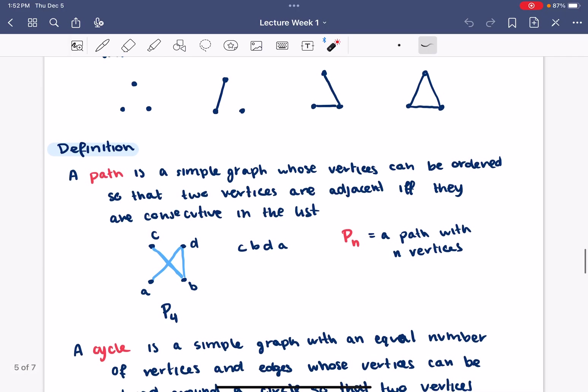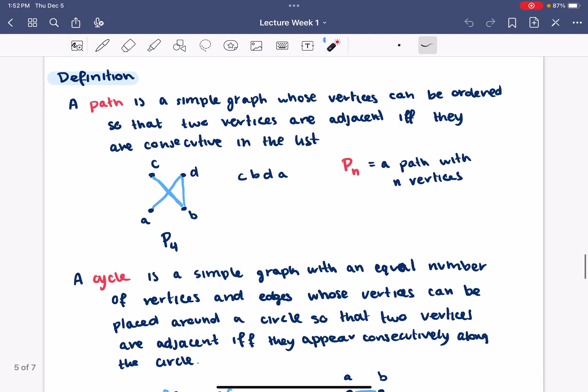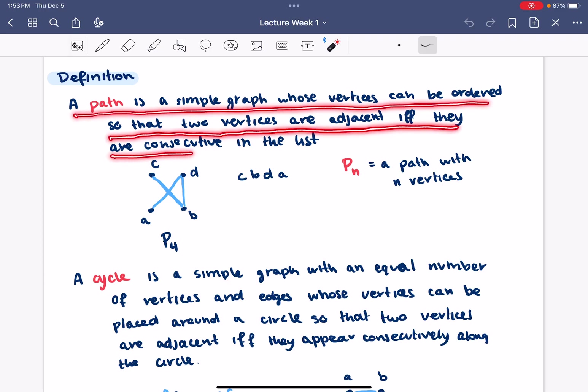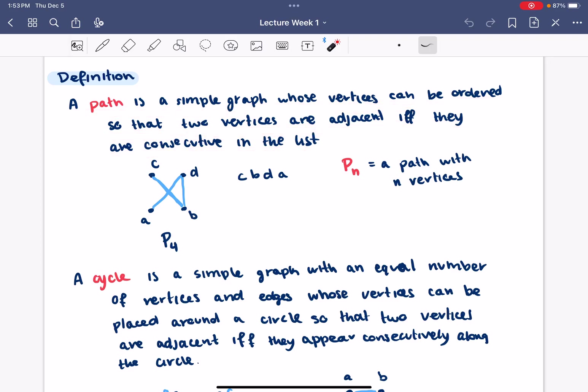Then some more vocabulary words related to graphs. A path is a simple graph whose vertices can be ordered so that two vertices are adjacent if and only if they're consecutive in the list. Basically, it's exactly what you think it is. We can just start somewhere and move through like this and end somewhere else. And that's a path. P sub N is the graph which is a path having N vertices.